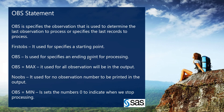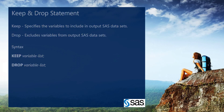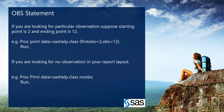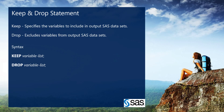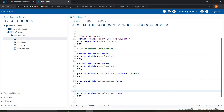This is related to the proc step and how we use the obs statement. In the obs options: 'obs' is the ending point, 'firstobs' is the starting point, and 'obsmax' is used for the maximum observations in the output. 'noobs' removes the observation numbers from the output.